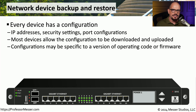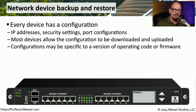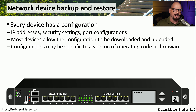All of the devices on our network have configuration files. These may be files we can easily list on screen, or they may be stored in different places on the switch, router, or firewall. Many of these devices allow us to back up configuration files and restore those configurations if we need to make changes. These configuration files might also be specific to a particular software version running on that device, so if we have an older configuration file and a newer version of software running, we may not be able to load that older configuration back onto the device.